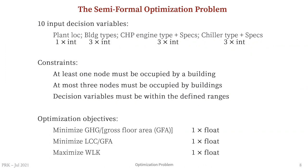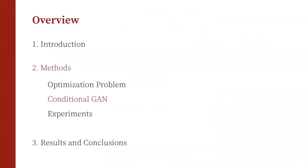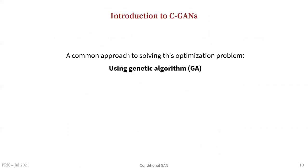The optimization objectives are minimizing greenhouse gas emissions, minimizing life cycle costs, and maximizing the walkability score of the neighborhood. The optimization objectives are real-valued numbers.